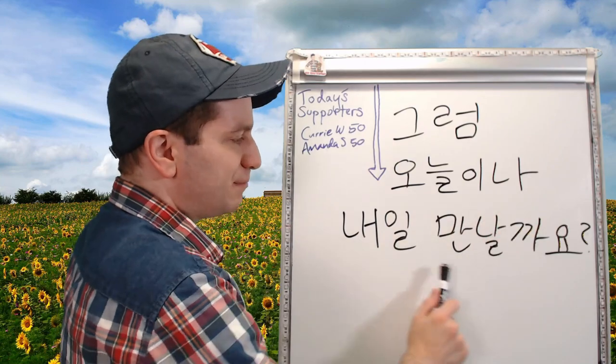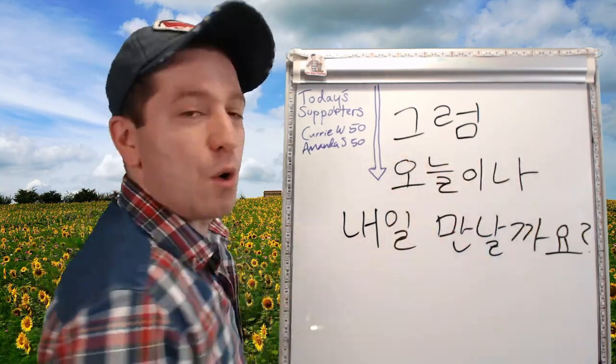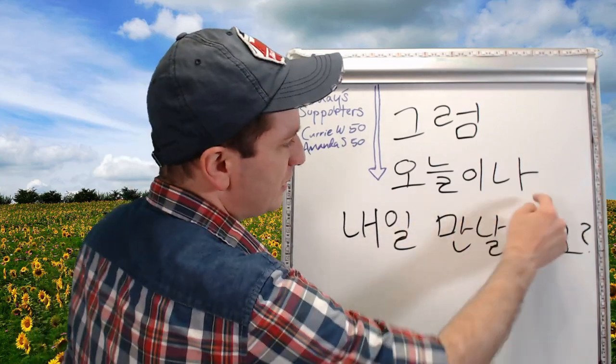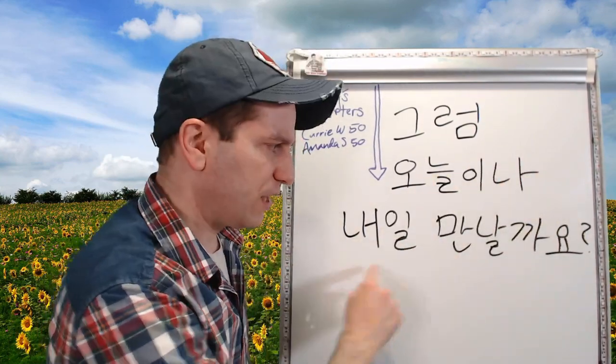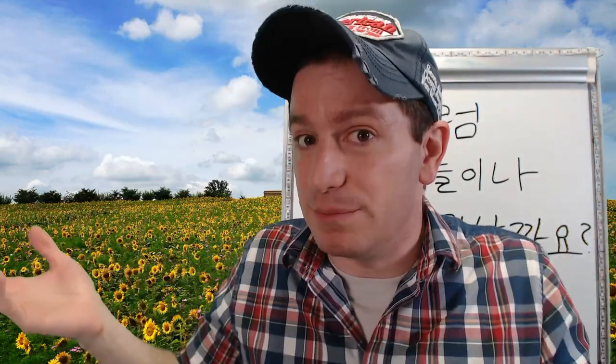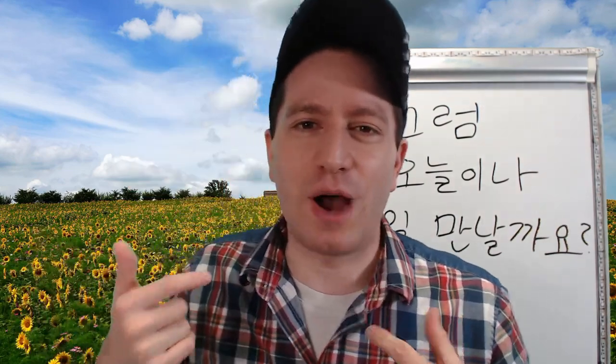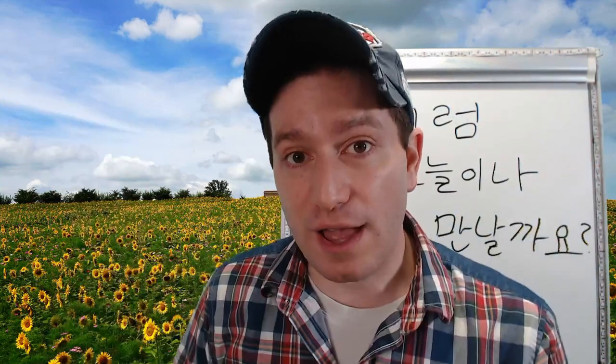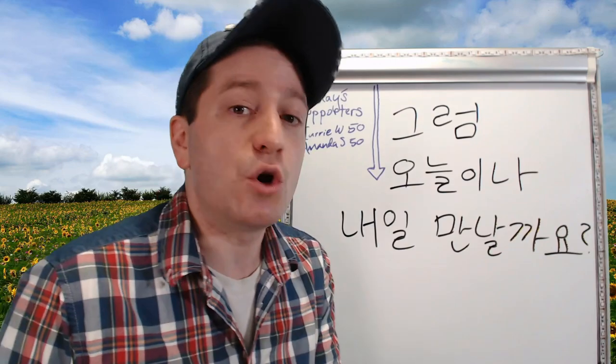Let's do our first example sentence. 그럼 오늘이나 내일 만날까요? '그럼' means 'well then,' '오늘이나 내일' means 'today or tomorrow,' and '만날까요?' means 'shall we meet?' We have two choices: today and tomorrow. It's like saying 'today or tomorrow or another day or sometime' — that sort of meaning. It shows the speaker has no preference. 그럼 오늘이나 내일 만날까요? — 'Well then, should we meet like today or tomorrow?'